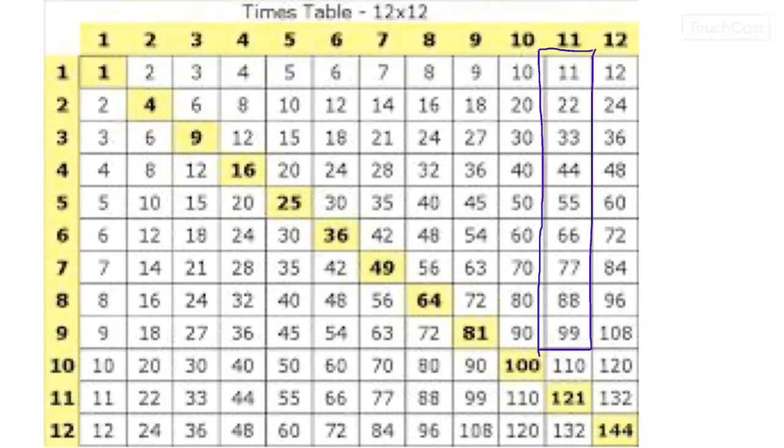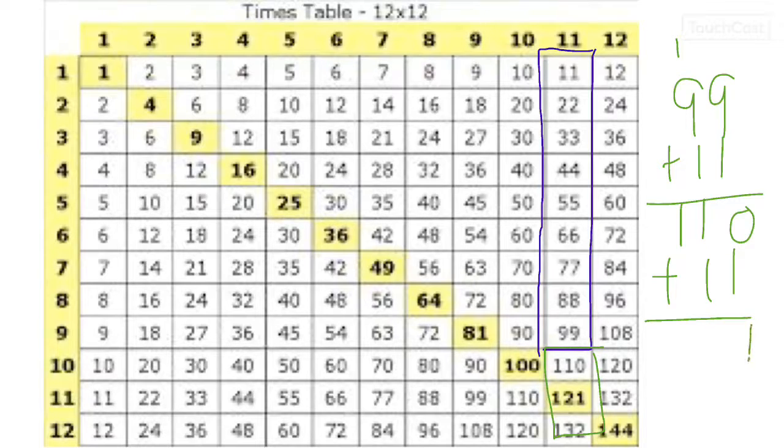Then after that, the last three are kind of tricky. You really just have to memorize them, or you can add 11. So like 99 plus 11 is 110, plus another 11 is 121, plus another 11 is 132. Okay, so the last three are tricky, but 11 times 1 through 11 times 9 should be fairly easy.